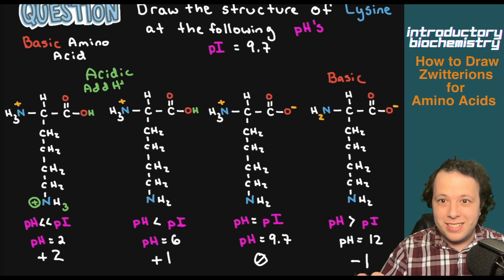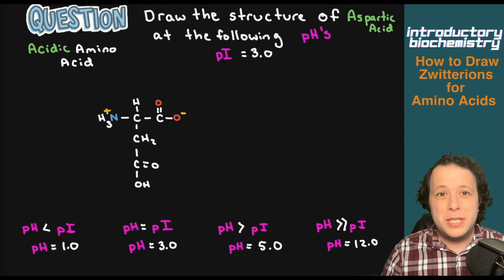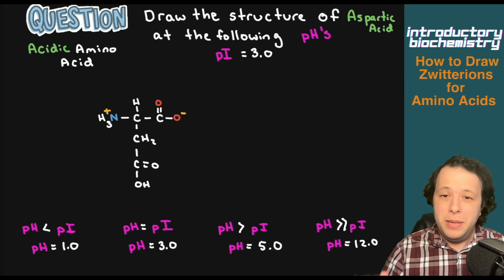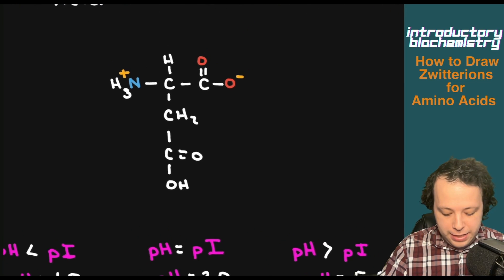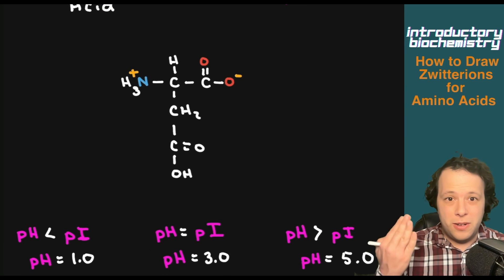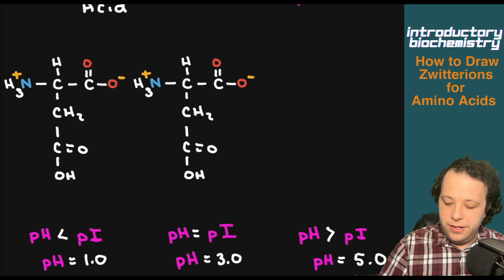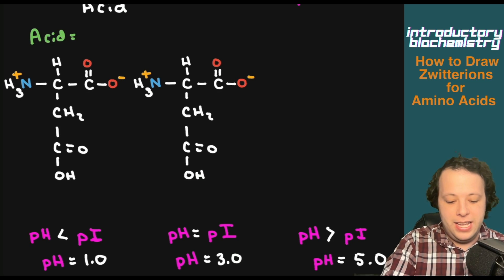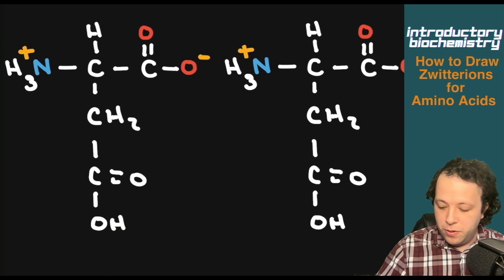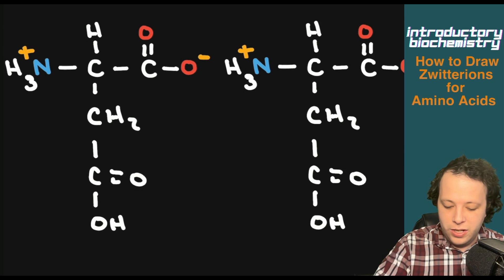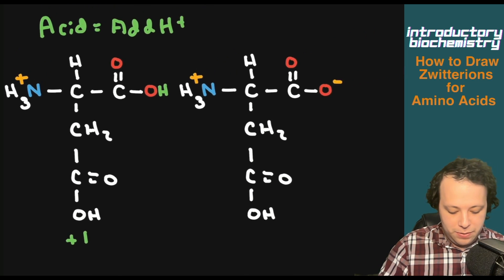Let's do one more together. The first example was neutral, and we just did a basic amino acid — now let's look at an acidic amino acid. Draw the structure of aspartic acid at the following pHs. The PI is 3.0, meaning that's where it's considered neutral for this amino acid. What I already have drawn is a zwitterion. Going in the acidic direction — acid means add hydrogen. We can add H+ to the negative charge on the carboxylate group, and the overall charge turns to plus one.